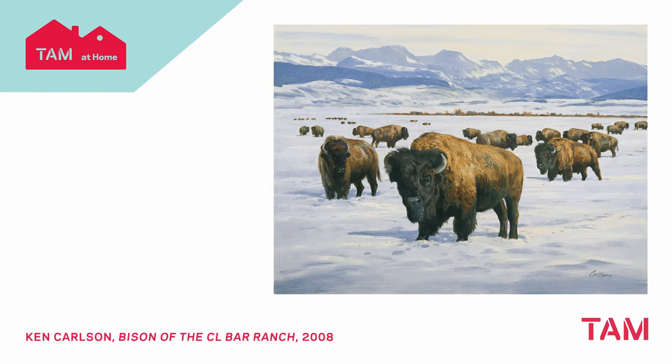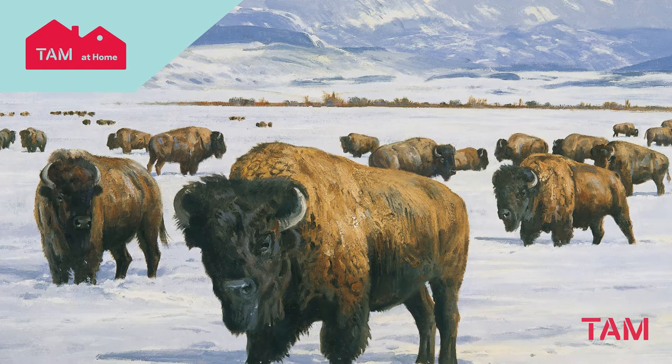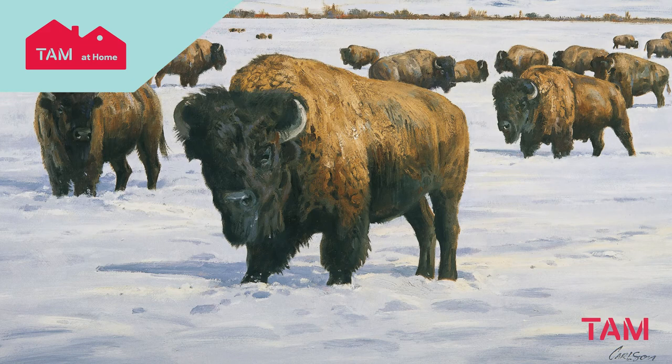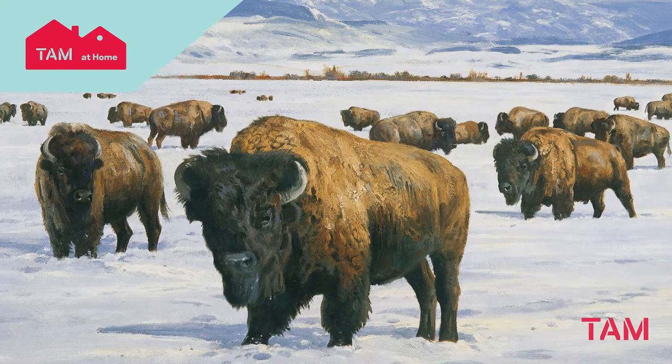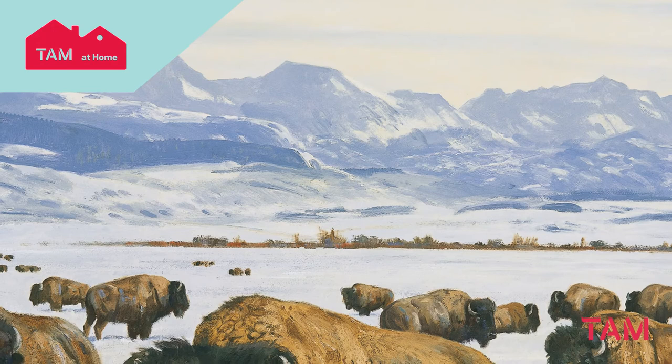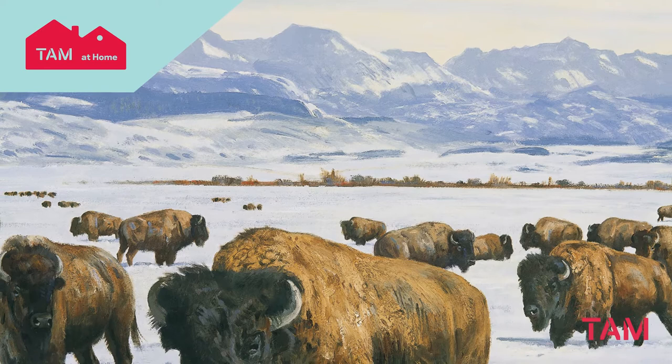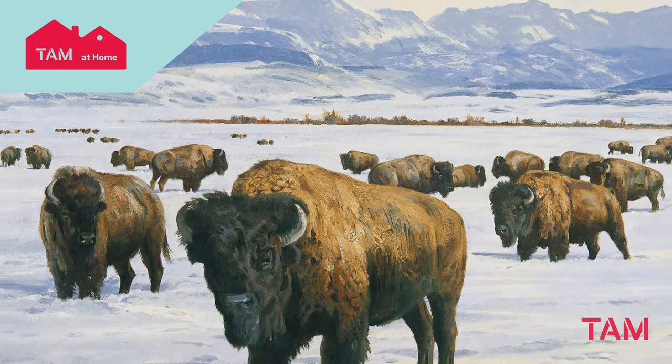Now let's look at a work of art from the Tacoma Art Museum entitled 'Bison of the Seal Bar Ranch' by Ken Carlson. Quietly look at this work of art, starting from the top, working your way down, going from left to right. When you look at this work of art, what clues does the artist give us to show us the background, the middle ground, and the foreground?